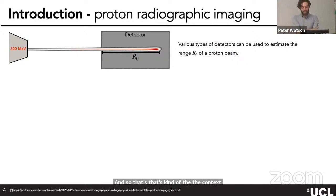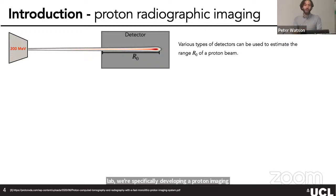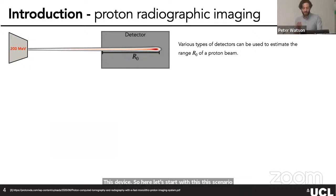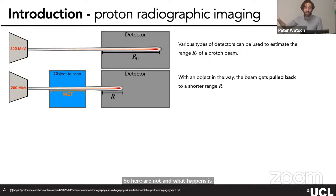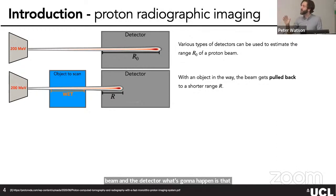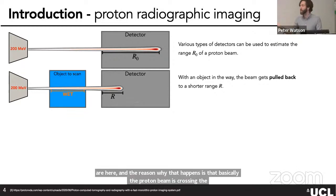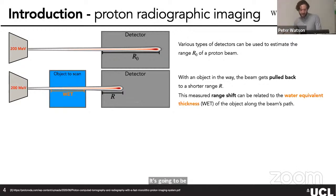Adaptive proton therapy can be done at multiple timescales — through real-time tracking for intrafraction changes, or by re-planning the dose if the anatomy has changed too much on the day of treatment. That's the context for why we want to do proton imaging. In our lab, we're developing a proton imaging system for adaptive proton therapy. Consider irradiating with a 200 MeV proton beam — various detectors can measure what we call the range of the proton beam.